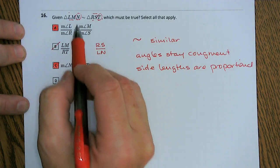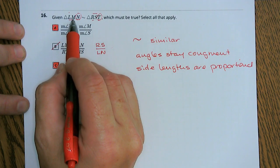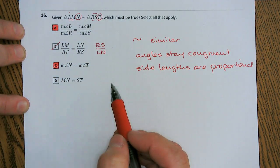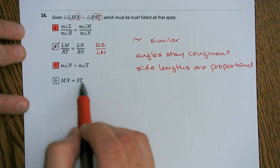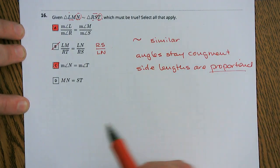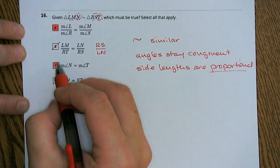MN equals ST, well MN is the second and third, ST second and third, but they can't be equal, they have to be proportional, so it's not going to be D.